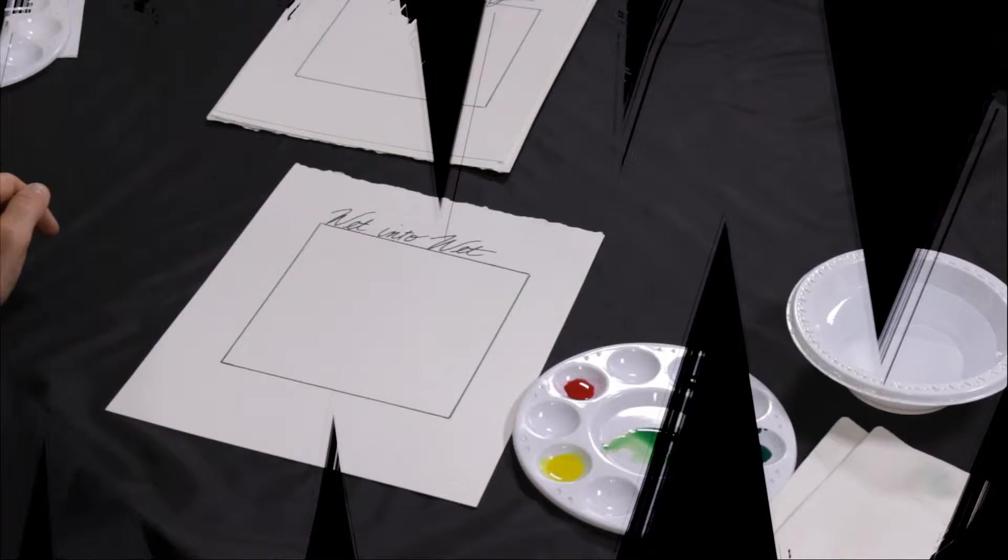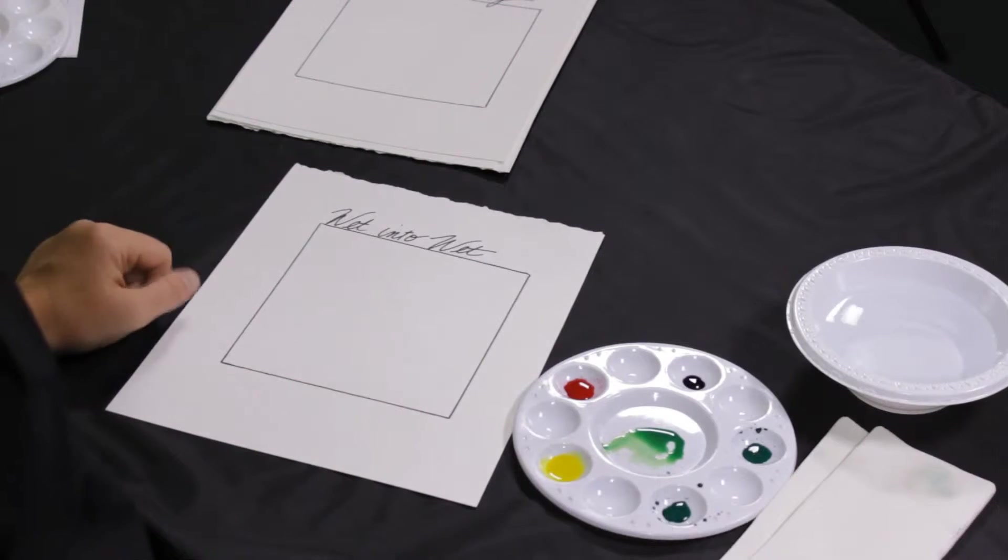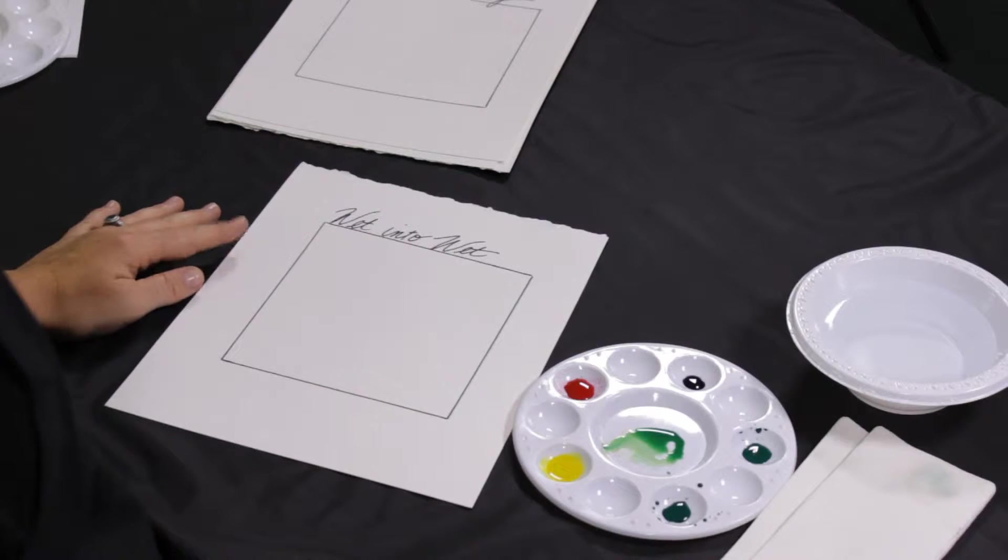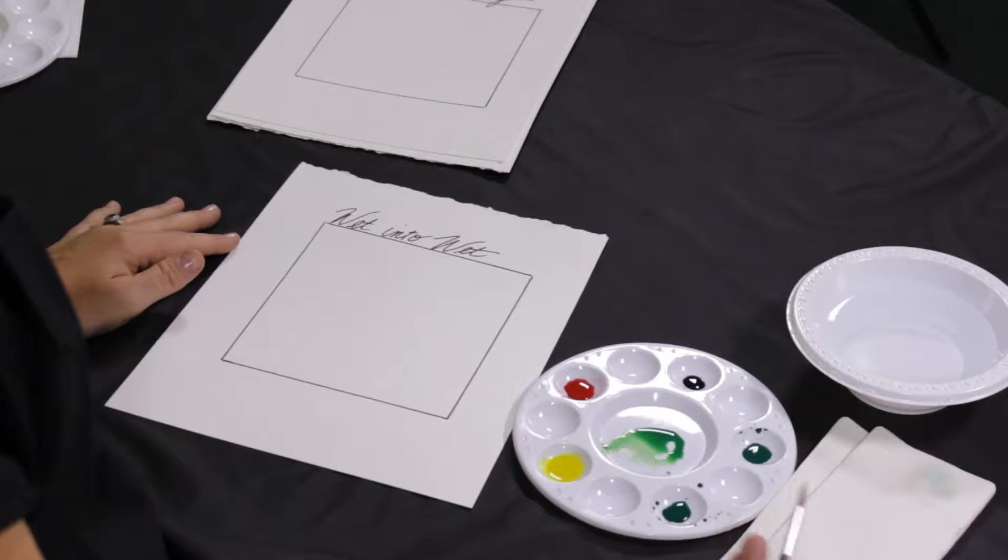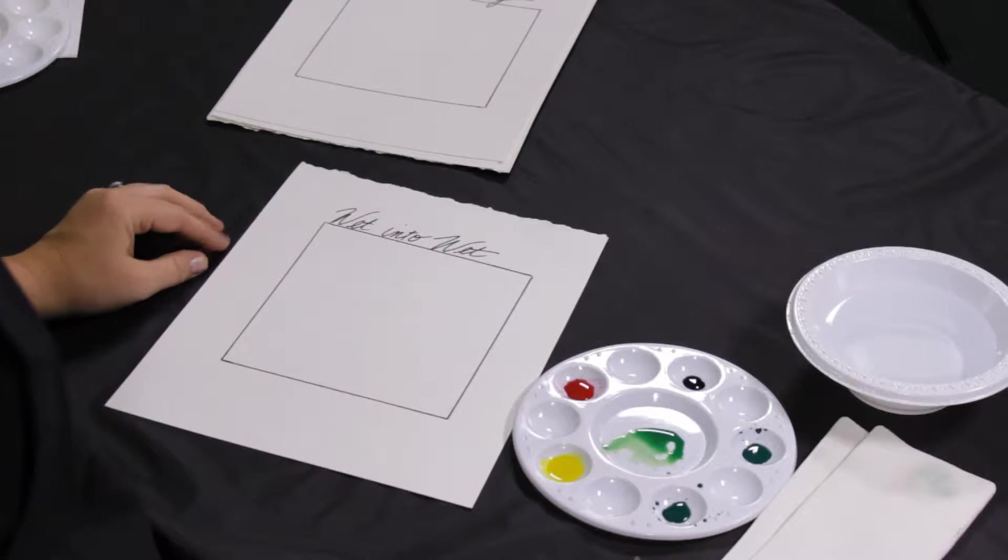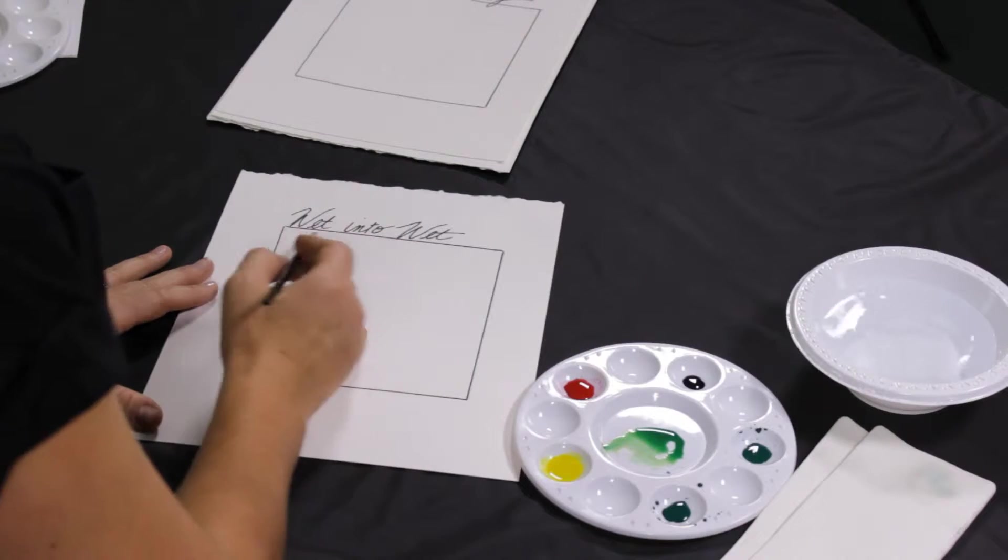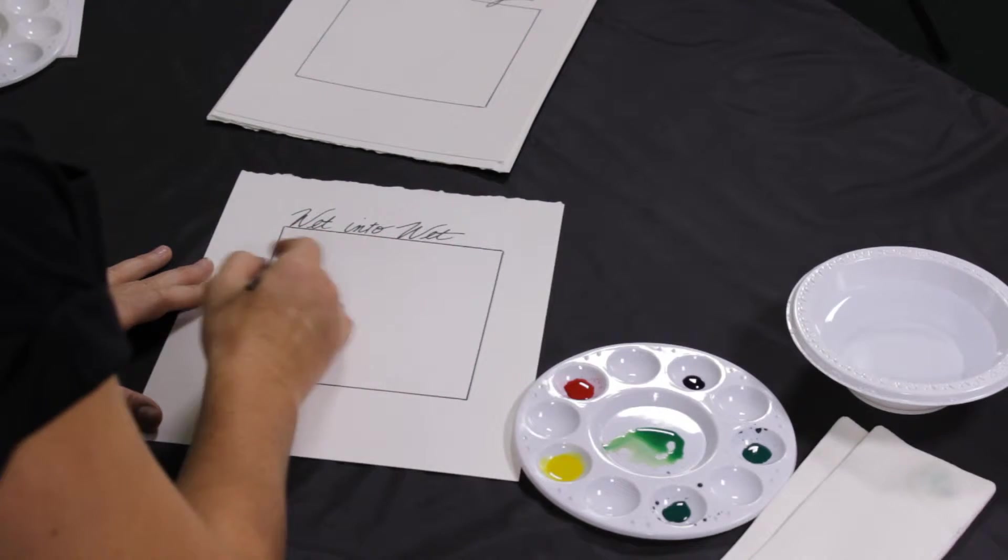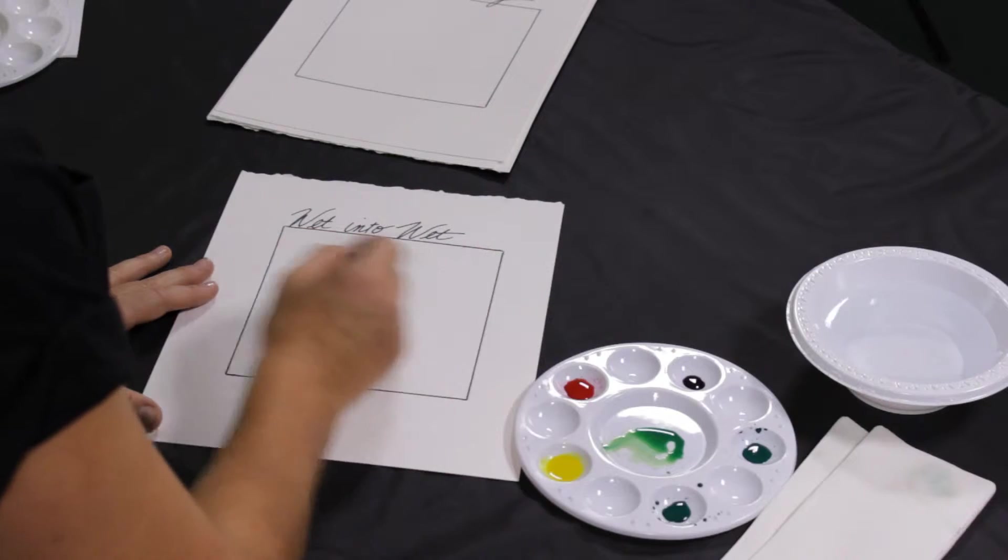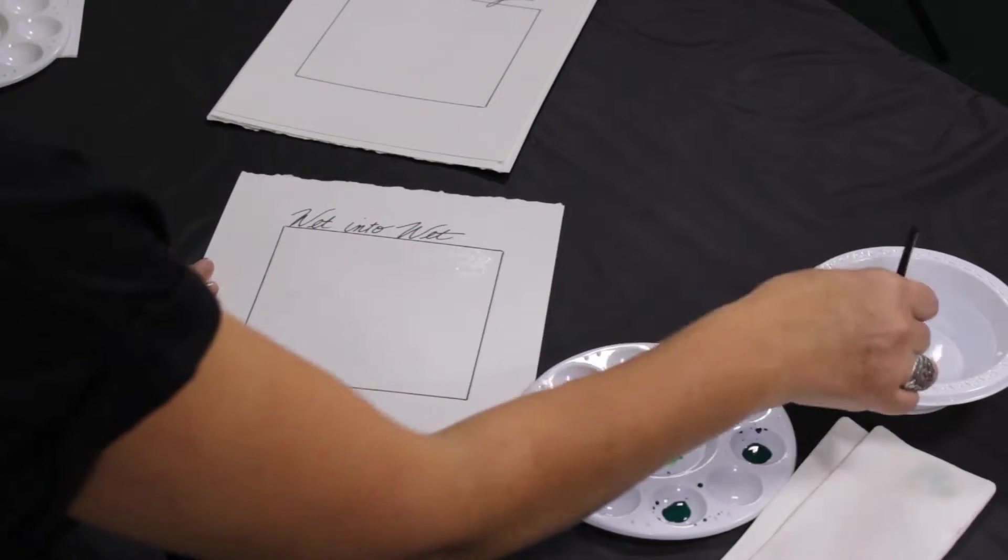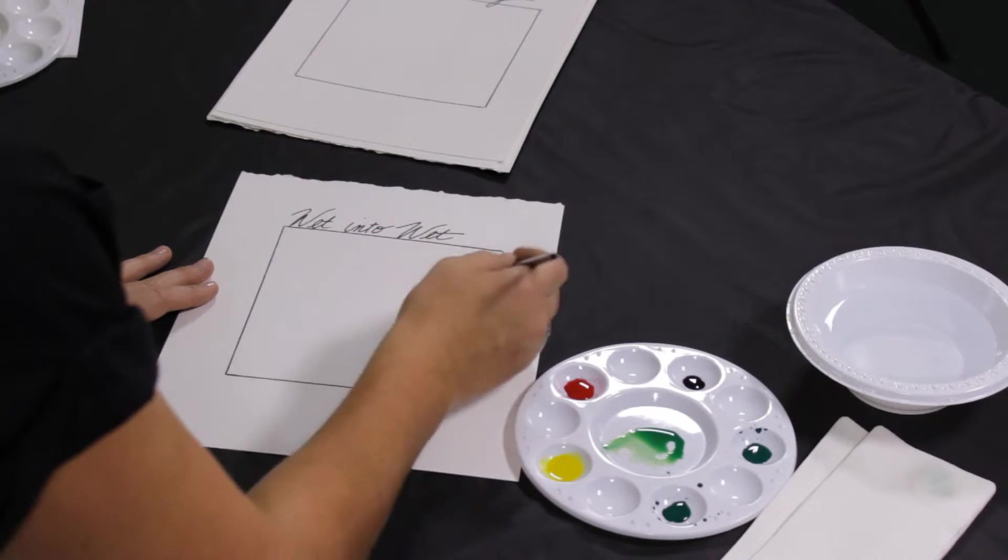Okay so our first basic watercolor technique would be the wet into wet. The first thing you need to understand about watercolors is it's a transparent medium which means the more water you add the lighter it gets. The whiter the paper will come through. So the wet on wet technique is a very loose technique great for backgrounds and just getting real fuzzy soft edges. The first thing you want to do is just wet the area that you want to do the wet on wet just with some clean clear water.